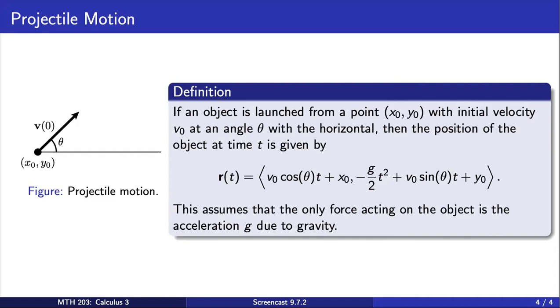If an object is launched from an initial position, x0, y0, with an initial velocity, v0, at an angle theta with the horizontal, then the position of the object at time t is given by the following vector-valued function r. This assumes that the only force acting on the object is the acceleration g due to gravity.